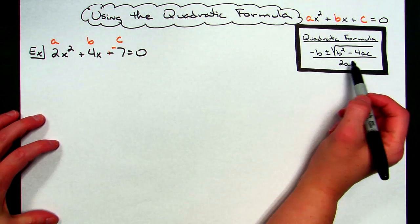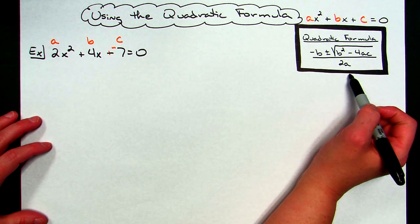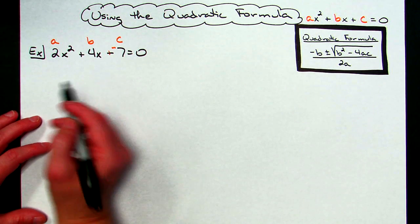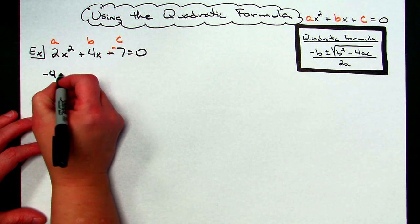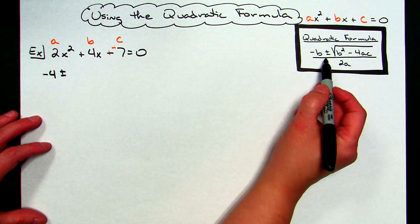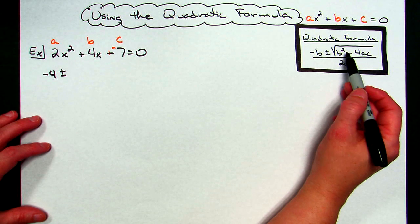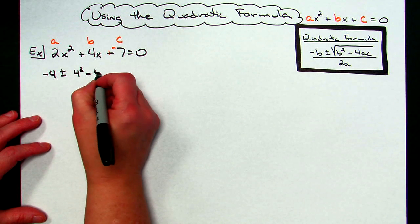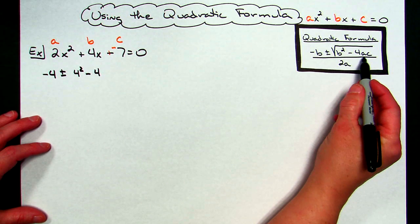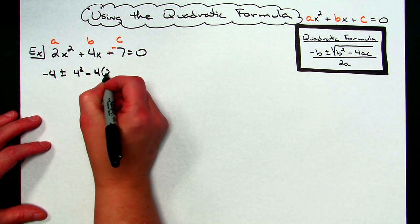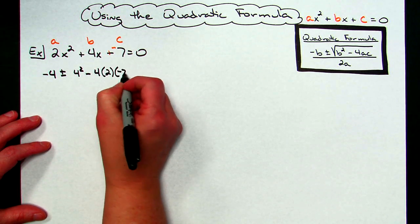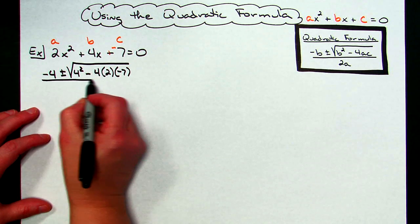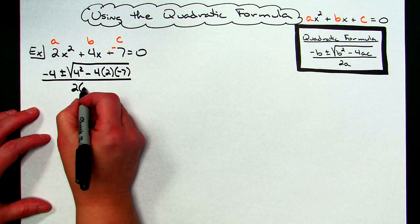I'm going to plug the values directly into the quadratic formula. It starts with negative b — b is 4, so I'll have negative 4 — then plus or minus. Then b squared: b is 4, so 4 squared, minus 4 times a times c. My a is 2 and my c is negative 7, all under the square root, and that's all over 2 times a, where a is 2.